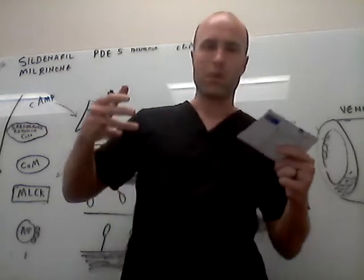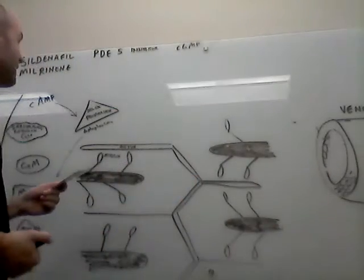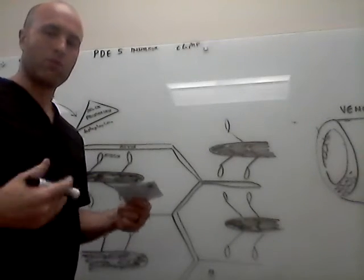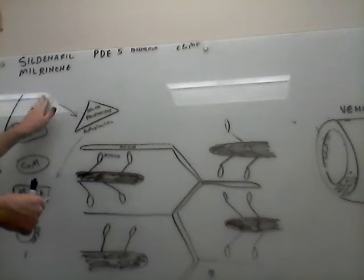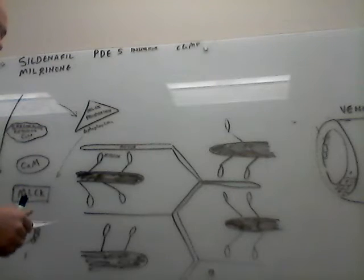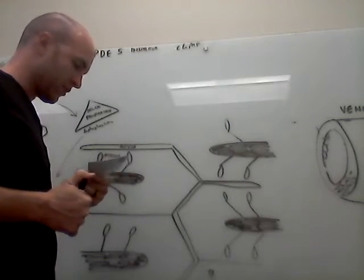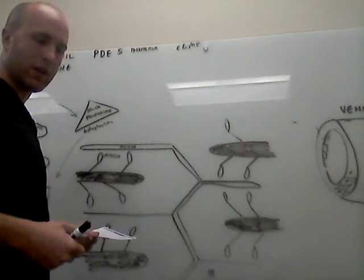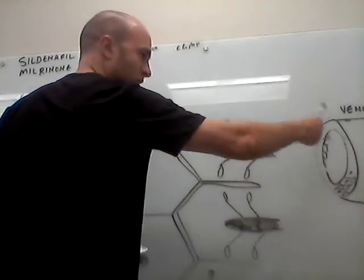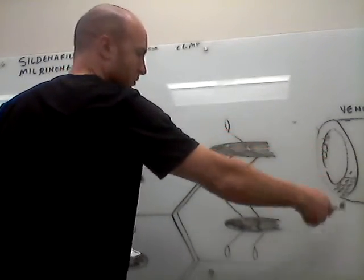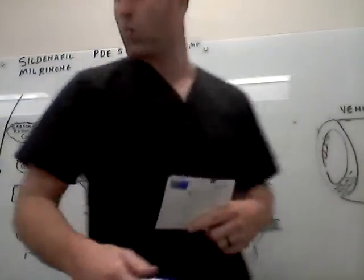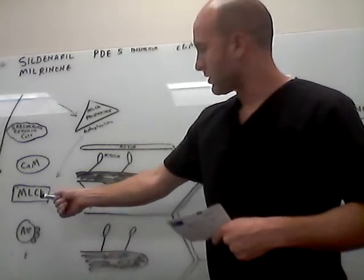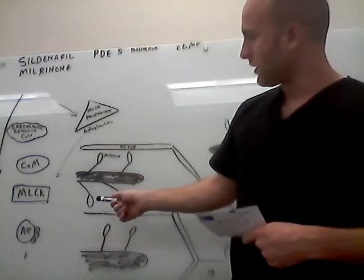First of all, sildenafil. Basically what's going on here is that phosphodiesterase is an enzyme that breaks down cyclic GMP. And cyclic GMP is what essentially causes smooth muscle... So here's blood vessels, inside are smooth muscles, actin, myosin. In order for this whole process to work, it has to have a myosin light chain kinase, put some phosphates on here.